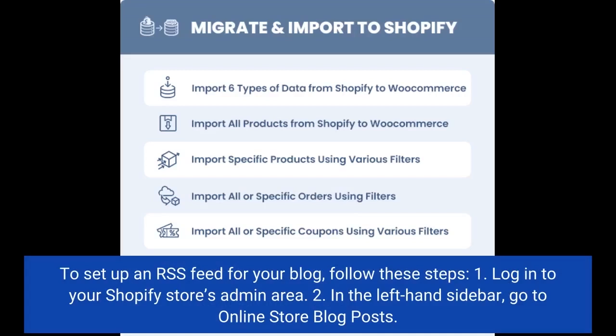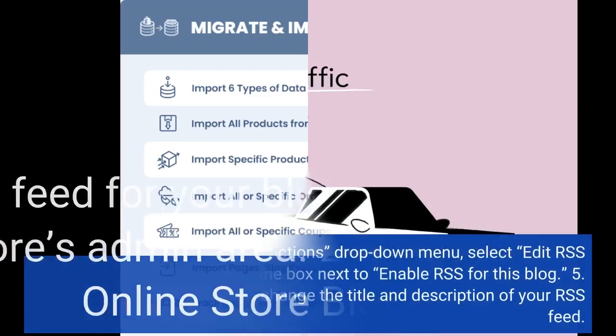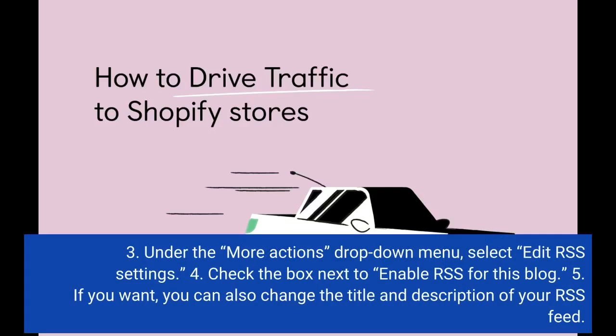Step 1: Log into your Shopify store's admin area. Step 2: In the left-hand sidebar, go to Online Store > Blog Posts. Step 3: Under the More Actions drop-down menu, select Edit RSS Settings.